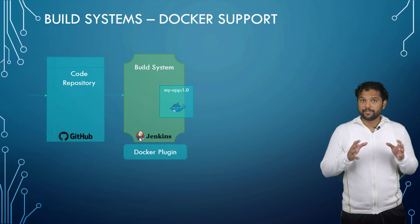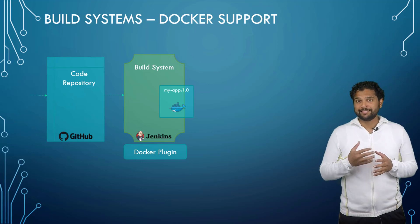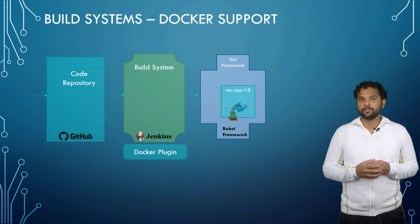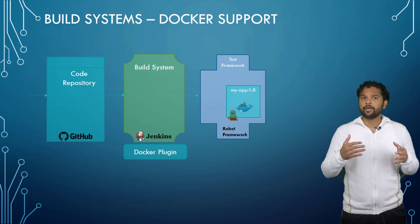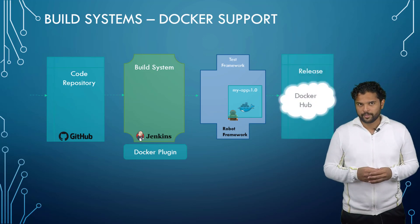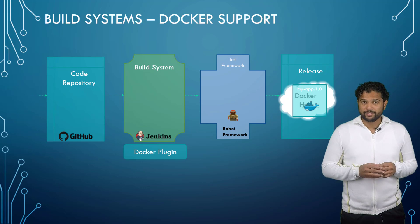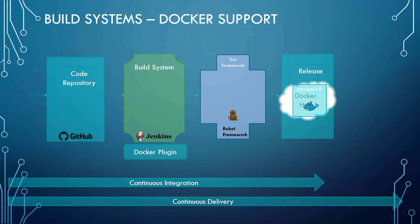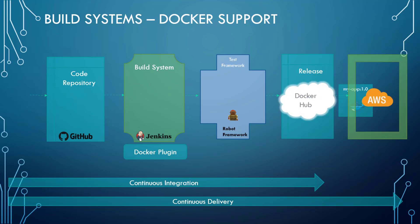On a successful build, this image can then be used to run tests. Once the tests are successful, it can be pushed to image repositories known as Docker registries — either to a repository internal to the company or external on Docker Hub. This entire cycle of automated actions, from making a change in the application to building, testing, releasing, and finally deploying in production, completes a CI/CD pipeline.